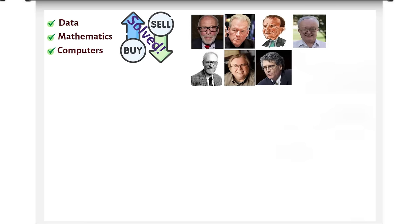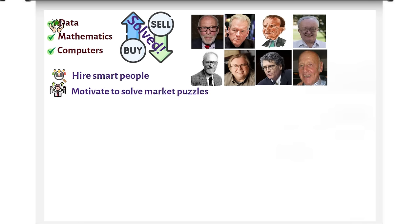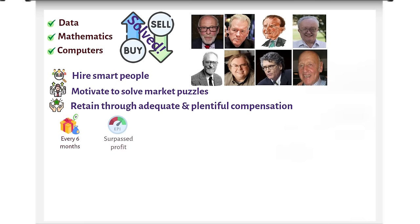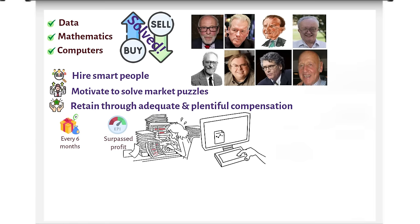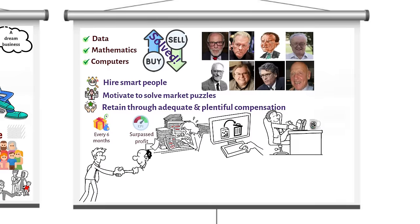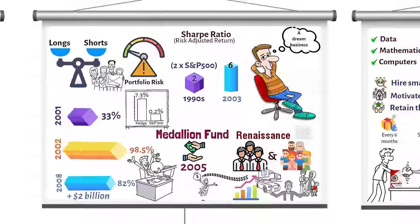Apart from using lots of data, mathematics and computers to solve the markets, the thing that brought Renaissance huge success was Jim and his team's ability to hire smart people, motivate them to solve pressing financial market puzzles, and retain them through adequate and plentiful compensation. Renaissance employees received bonuses every six months, but only if Medallion surpassed a certain profit level. It didn't matter if staff uncovered new signals, cleaned data, or did other low-profile tasks; if they distinguished themselves, and Medallion thrived, they were awarded.